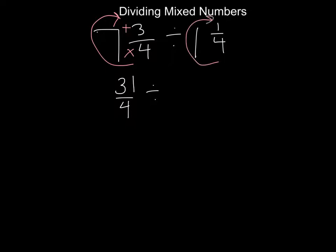And then the other one, 1 and 1 fourth, we'll do reverse C: 4 times 1 is 4 plus 1 is 5 fourths. Now we are ready for our three words keep change and flip.